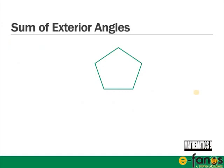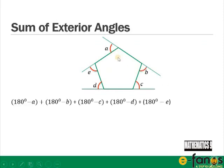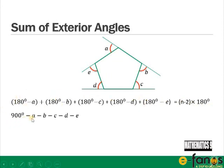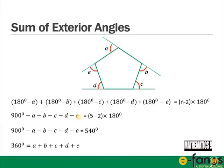For the sum of exterior angles: labelling the exterior angles of a pentagon a, b, c, d, and e, the interior angles are (180 − a), (180 − b), (180 − c), (180 − d), and (180 − e). Their sum equals (n − 2) × 180, so for a pentagon: 900 − a − b − c − d − e = 540, giving a + b + c + d + e = 360. All exterior angles of a polygon add up to 360 degrees.